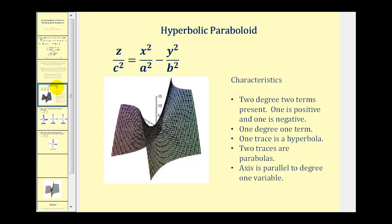Remember, when we have a quadratic surface, the form of the equation tells us what type of quadratic surface we have. For a hyperbolic paraboloid, we have two terms of degree two — one positive and one negative — and also one degree one term. When we take a look at the traces, one trace will be a hyperbola, and then we'll have two traces that are parabolas. The axis of the surface will be parallel to the degree one variable.